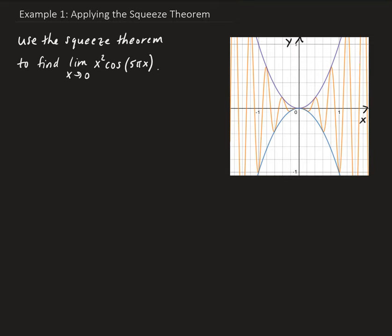In this example, we want to use the squeeze theorem to find the limit of x squared times cosine of 5 pi x as x approaches 0. To use the squeeze theorem here, remember that we need to bound our function. In this case, our function is x squared times cosine of 5 pi x.